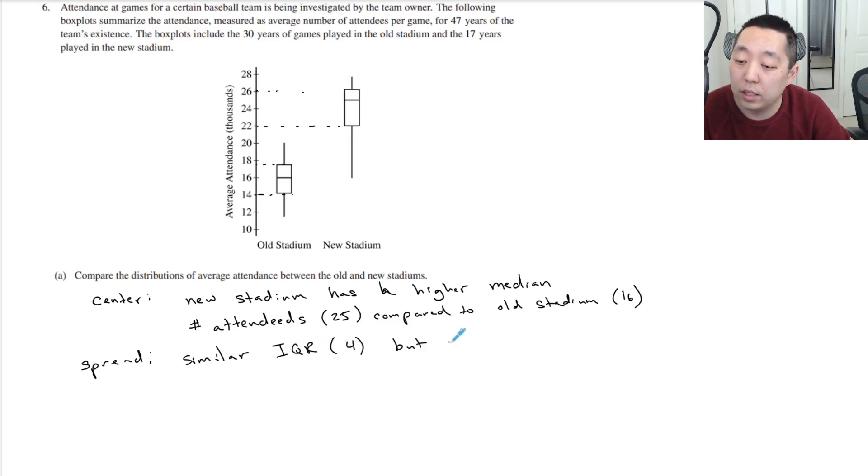But the new stadium does have a larger range. Range being the largest minus the smallest, right? This range is 8, this range is 12. 12 versus 8.